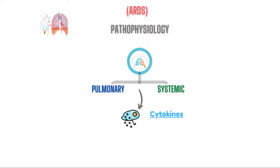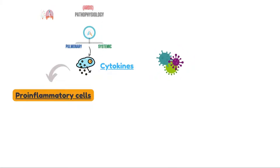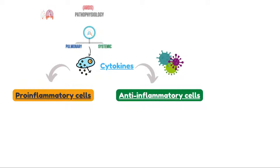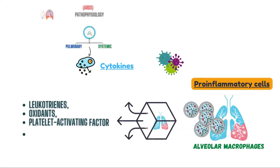This inflammation leads to release of cytokines and other pro-inflammatory cells. Cytokines are messengers that serve the immune system by regulating the body's response to disease and infection, as well as mediating normal cellular processes. Some cytokines are pro-inflammatory, making disease worse, while others are anti-inflammatory, reducing inflammation and promoting healing. These cytokines activate alveolar macrophages and recruit neutrophils to the lungs, which in turn release leukotrienes, oxidants, platelet activating factor, and proteases.